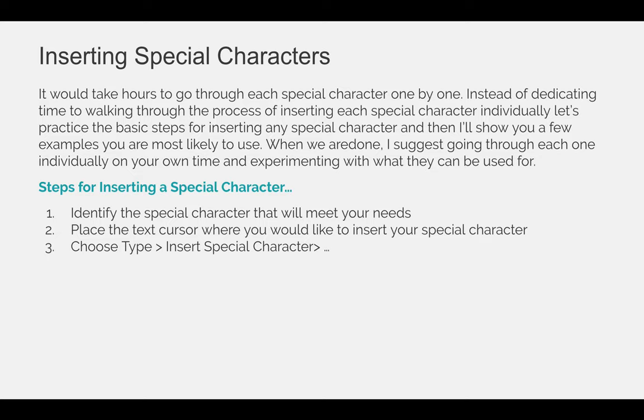The basic steps needed to insert a special character are: identify the special character that meets your needs, place a text cursor where you would like to insert your special character—it must be blinking—and then choose Type, Insert Special Character, and then choose the flyout menu that you're looking for.